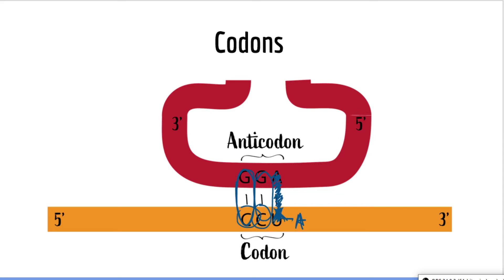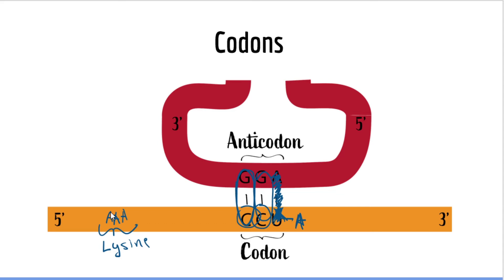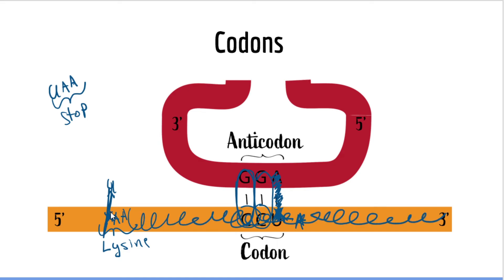Occasionally you can get a mutation which converts a regular codon into one of the three stop codons — that is an example of a nonsense mutation. For example, the codon AAA normally codes for lysine. If a mutation converts the A in the first position to a U, you get the codon UAA, which does not code for an amino acid but instead signals the stopping of translation. The ribosome will stop reading the mRNA at that position, resulting in truncated proteins that are usually non-functional.